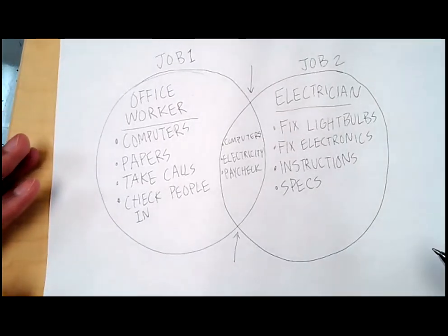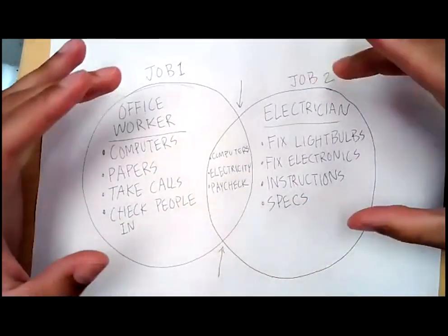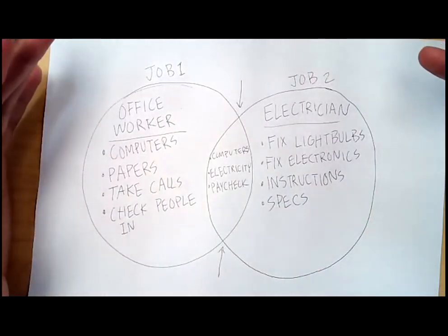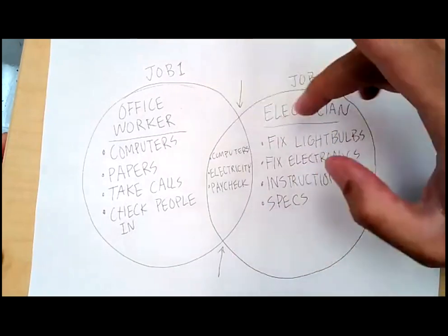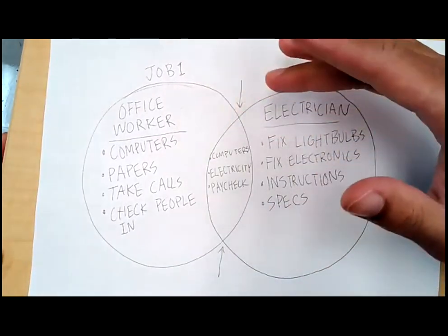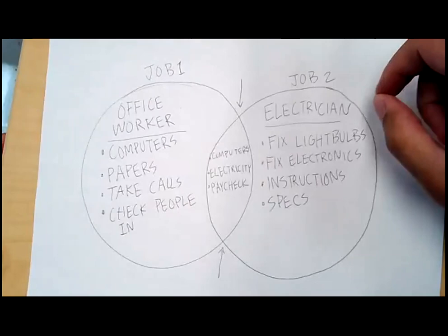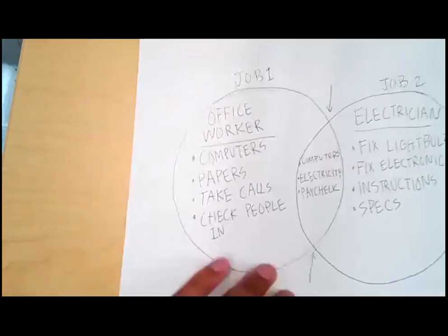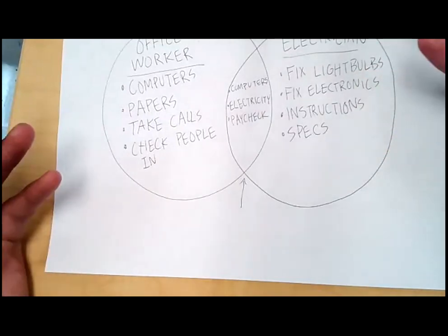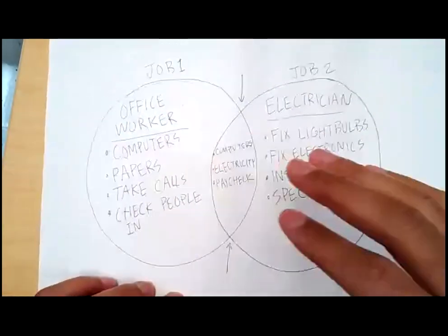We're going to do the same thing today with the two stories that we have for our readings. This is how you can make a graphic organizer to set things up for your assignment. Your assignment is going to be a paragraph long. So you can say, for some sentences, an office worker and electrician are different, but also they have similar things — same idea with the stories. This is how you can set up your graphic organizer to keep your mind organized and focused so you can do the assignment.